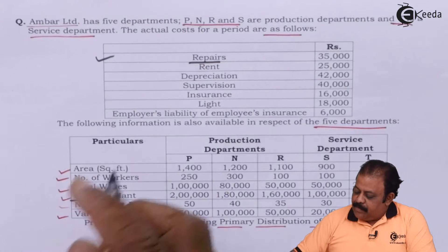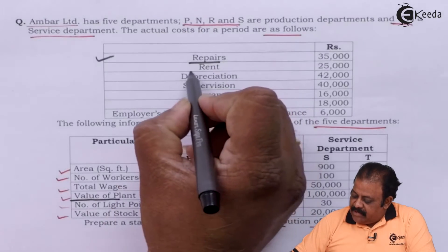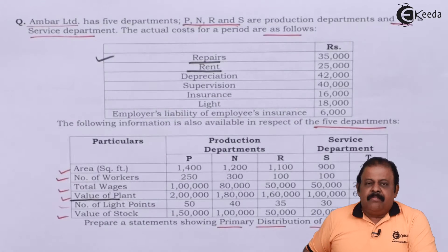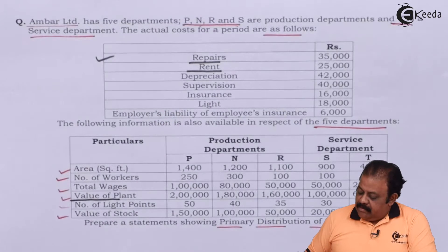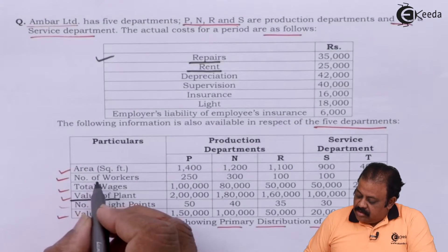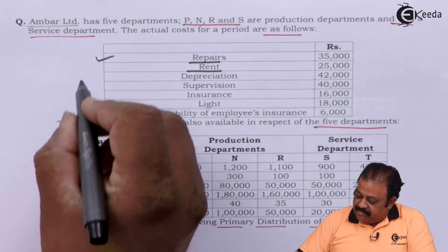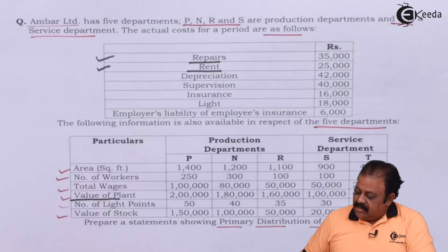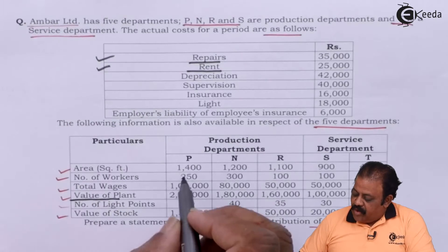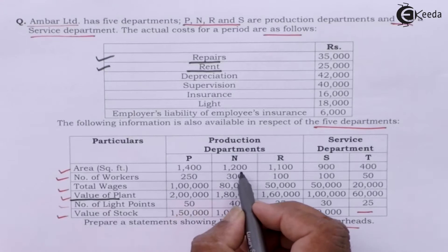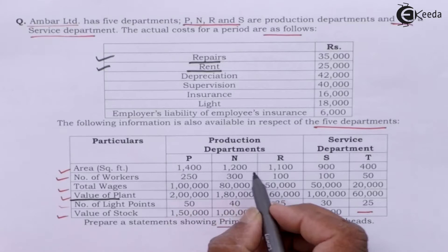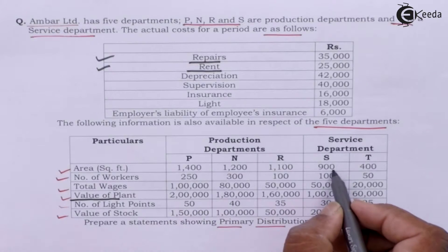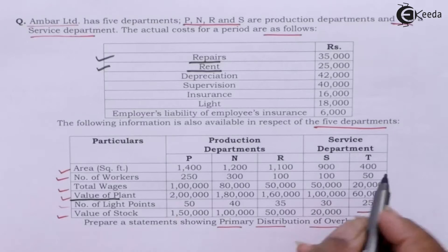The next expense is rent. This will be allocated based on area in square feet, that is in the ratio of 1400 : 1200 : 1100 : 900 : 400.